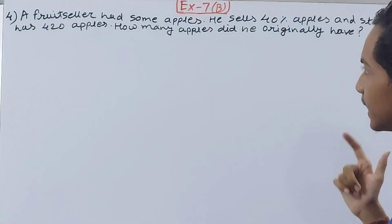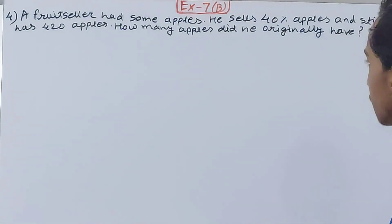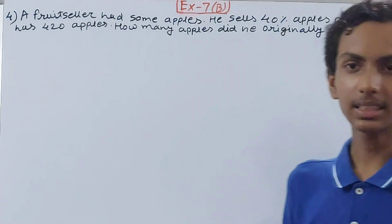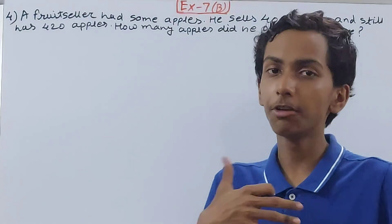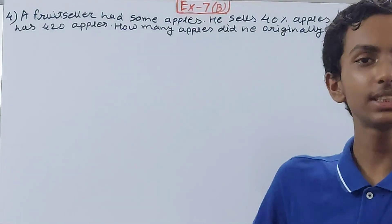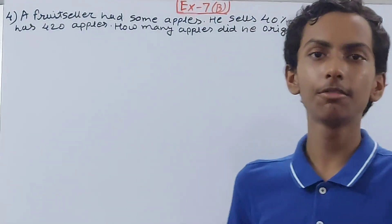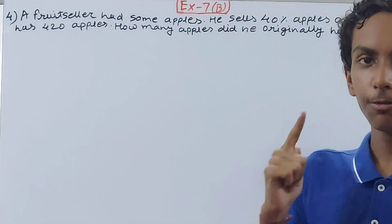How many apples does he originally have? Right, so the fruit seller has some apples in the starting. We don't know the number of apples, so he has some apples. Out of those, he sells 40 percent of those apples away, so he is still left with how many apples? 420 apples, right?